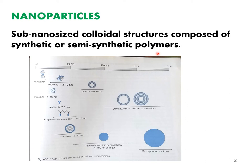In nature also, we find several naturally occurring nanoparticles. DNA is also in the nano size range — its diameter is as small as 2 nanometers. Several naturally occurring proteins lie between 1 to 10 nanometers. The size of antibodies is 7.5 nanometers. Polymeric drug conjugates, which are designed delivery systems, lie in the range of 5 to 50 nanometers.